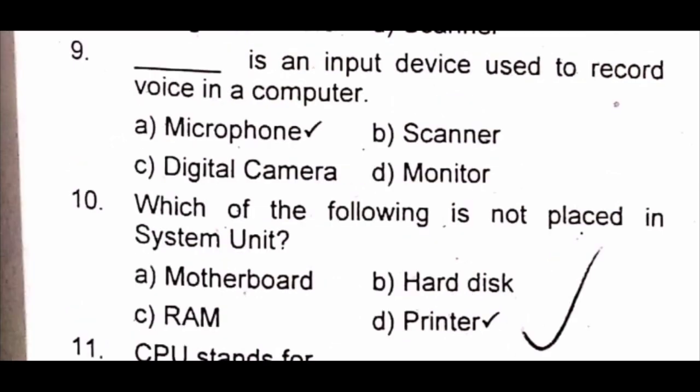Question 9: Dash is an input device used to record voice in a computer. A) microphone B) scanner C) digital camera D) monitor. The answer is A) microphone. Question 10: Which of the following is not placed in the system unit? A) motherboard B) hard disk C) RAM D) printer. The answer is D) printer.